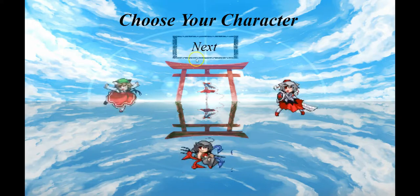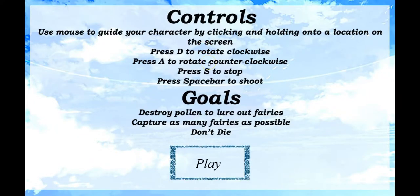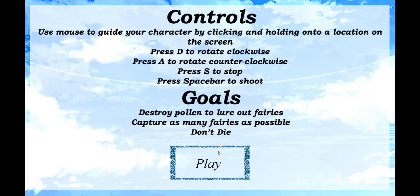I'll choose the one on the left and click next. It will show you the controls: use your mouse to drag your character around, D is to rotate clockwise, A is to rotate counter-clockwise, and S is to stop whenever the fairy's movement becomes too hard to control. Since fairies are known for rapid movement and quick pace, S is there to stop your fairy from moving too quickly. The goal is to destroy pollen in order to lure out the fairies and then capture as many fairies as possible.